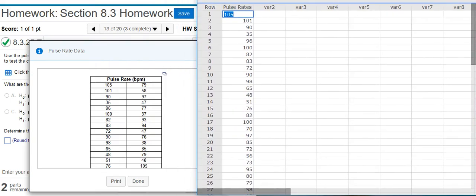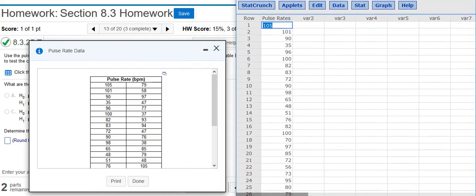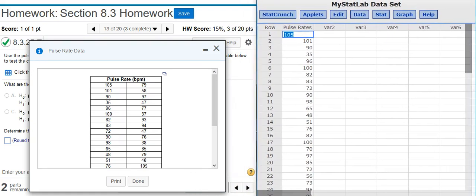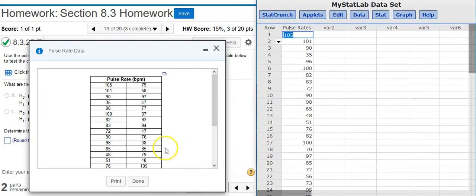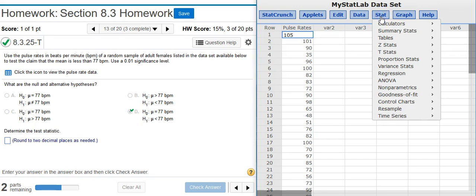So here's my data in StatCrunch, and now I'm going to resize this window so we can see everything a little bit better. So now here in StatCrunch, I'm going to go up to Stat. When you're testing the mean, you could select Z Stats or T Stats. To know which one to select, we need to ask ourselves the key question,